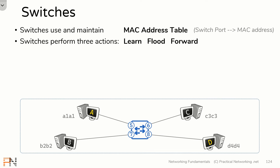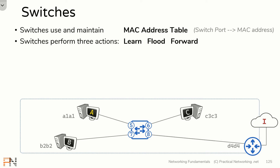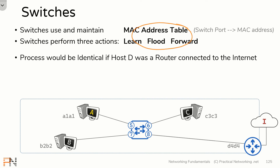Before I let you go, there are two more ideas I want to leave you with. First, our illustration involved host A sending a packet to another host, but everything we showed you would still apply if the destination were a router and host A was trying to send something to the router to speak to something on the internet. The only thing that would be different would be the layer 3 header — and as we discussed, the switch doesn't even look at the layer 3 header. This process is exactly the same whether host A is speaking to a host on the local network or sending something to a router to reach a foreign network.